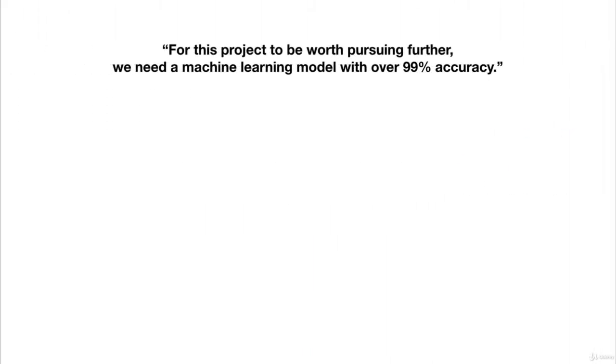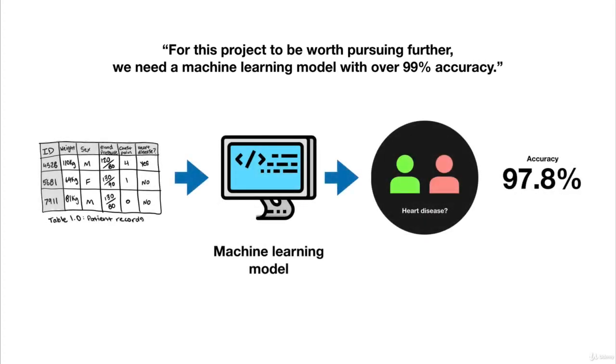For example, if your problem is to use patient medical records to classify whether someone has heart disease or not, you might start by saying, for this project to be valuable, we need a machine learning model with over 99% accuracy. Because predicting whether or not a patient has heart disease is an important task, so you'll want a highly accurate model.